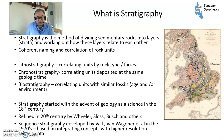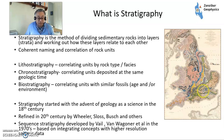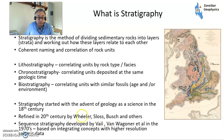Please check out 'The Map That Changed the World,' which is a really good book describing that. And biostratigraphy is correlating units with similar fossils, which is what William Smith used to make his map. Stratigraphy started back in the 18th century with the science of geology being codified, and was refined in the 20th century by Wheeler, Sloss, Bush, and others.